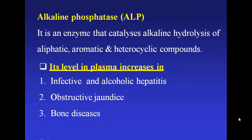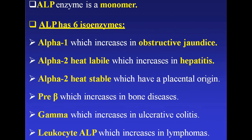The third isoenzyme example is alkaline phosphatase. Alkaline phosphatase is an enzyme that catalyzes the alkaline hydrolysis of aliphatic, aromatic, and heterocyclic compounds like proteins. Its level in plasma increases in infective and alcoholic hepatitis, obstructive jaundice, and bone diseases. This ALP enzyme is a monomer and has six isoenzymes: alpha-1 ALP, which increases in obstructive jaundice; alpha-2 heat-labile ALP, which increases in hepatitis; alpha-2 heat-stable ALP, which has placental origin; pre-beta ALP, which increases in bone diseases; gamma ALP, which increases in ulcerative colitis; and leukocyte ALP, which increases in lymphomas.